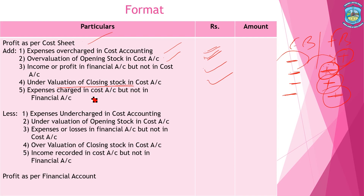Expenses charged in cost accounting but not in financial accounting: since we are charging these expenses in the cost book, the profit of the cost book will decrease, but the profit of the financial book will increase. Since the financial book profit is increasing, we add this item.